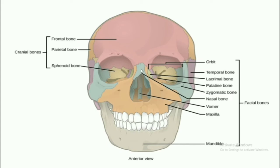The nasal bone forms the upper part of the nose; the front soft part is cartilage tissue. The vomer is a single bone inside the nose. Maxilla is the upper jaw and is two in number. Mandible is one in number. Remember: vomer and mandible are each one in number, while all the remaining facial bones are two in number.